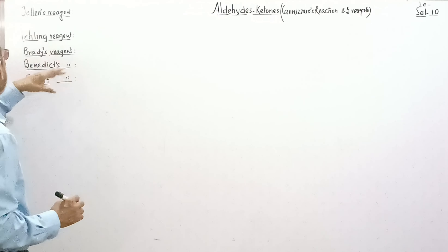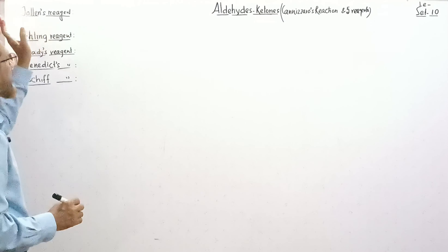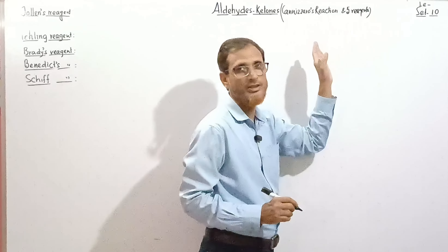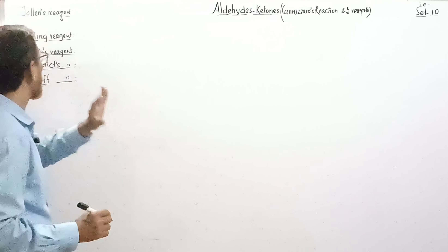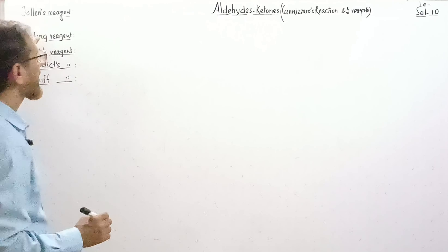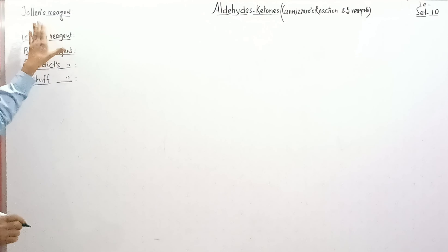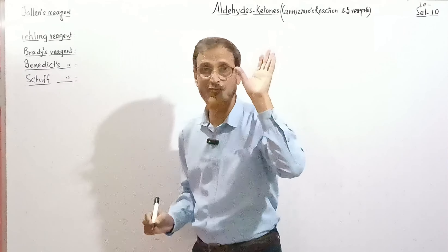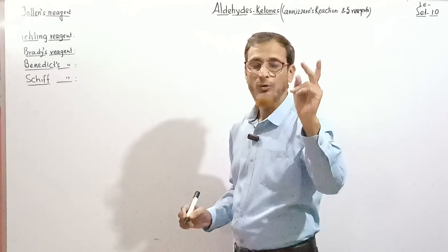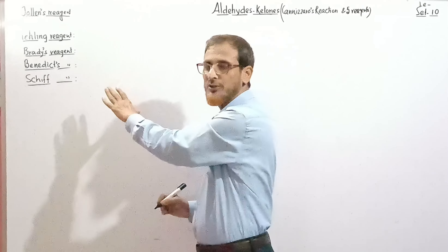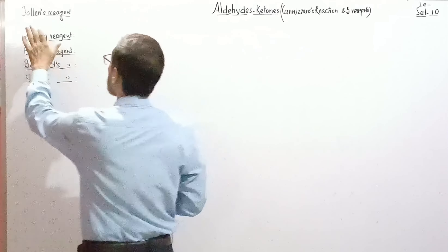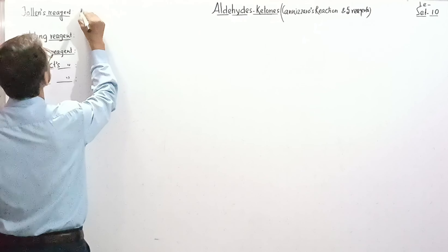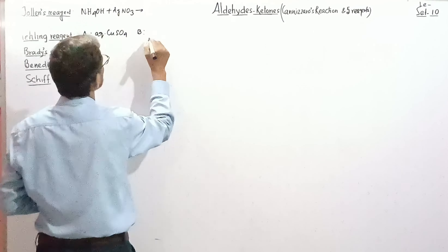The Cannizzaro reaction section is complete. The second part of today's class is about Tollens reagent and Fehling reagent — five types of important reagents. These reagents are extremely important because one or two questions are asked from this topic in virtually every entrance exam. Follow the class carefully.